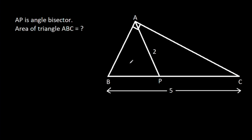In this video, we have been given that angle BAC is 90 degrees, AP is 2, BC is 5, and AP is the angle bisector. We have to find the area of triangle ABC.